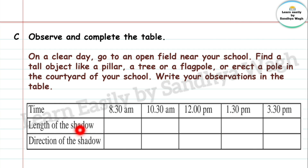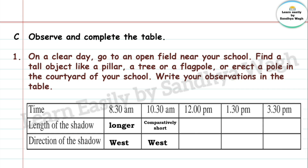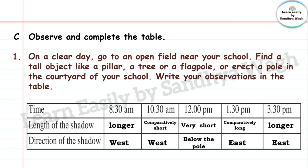Observe the length of the shadow and note the direction of the shadow. At 8:30 AM the shadow is long and faces the west direction, as the sun rises in the east. At 10:30 AM the shadow is comparatively short and direction is west. At 12 PM the shadow is directly below the pole.